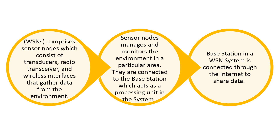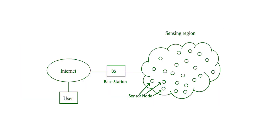This base station in the WSN is connected through the internet to share the data. You can see this diagram to better understand what is a wireless sensor network, which consists of a base station and a varied number of sensor nodes.